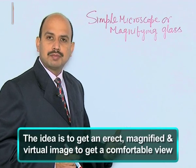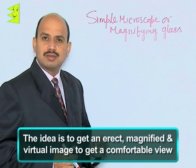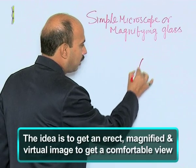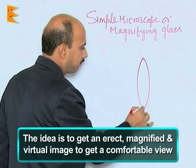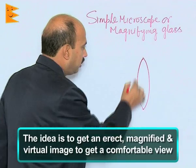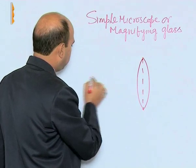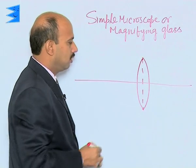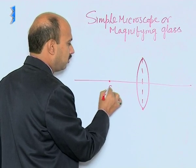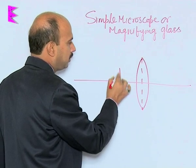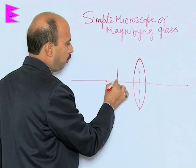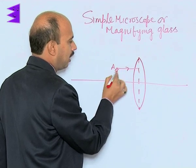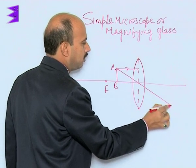In a simple microscope, a pure convex lens is chosen. We take a convex lens here, this is its axis, and this is the principal axis of the convex lens. Somewhere here is the focus, and suppose the object is placed over here at point AB. One ray is going straight and one is going to the optical center.